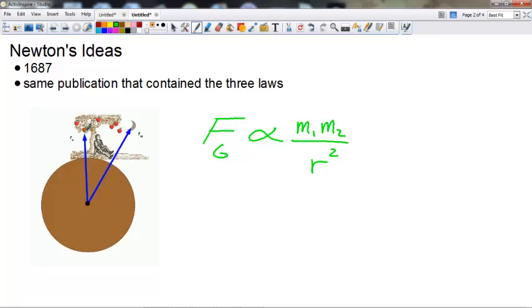So if you look at the apple, which is near the surface of the earth versus the moon, which is very far away, their R's are much different. So all Newton came up with was this proportionality.